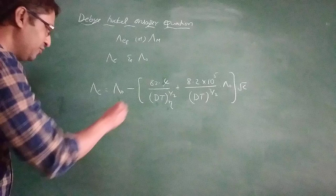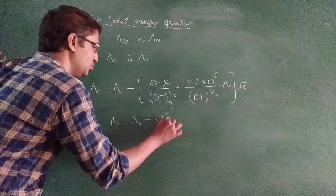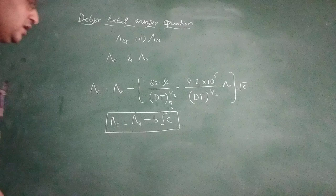It can be written in simple form: lambda C equals lambda 0 minus B root C. That is the short form of the Debye Hückel Onsager Equation.